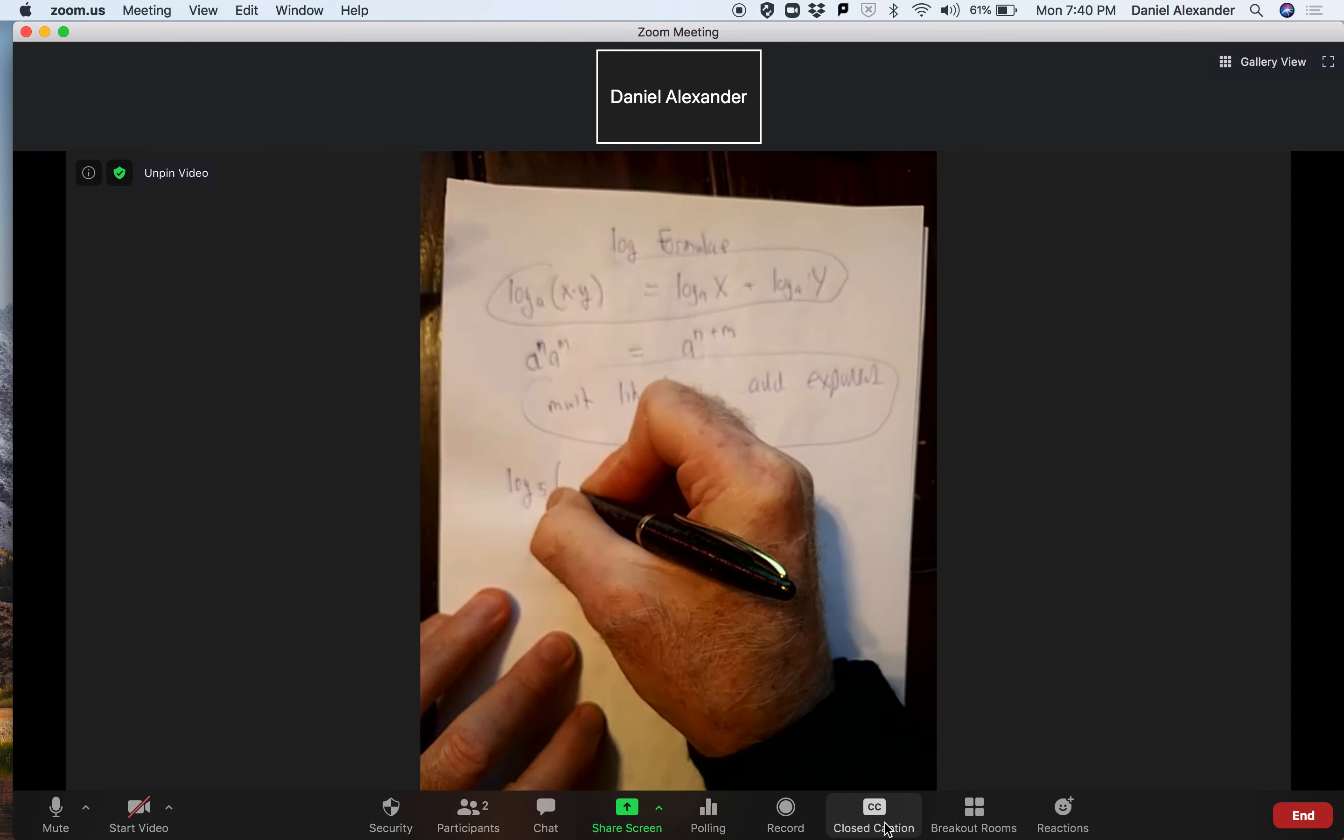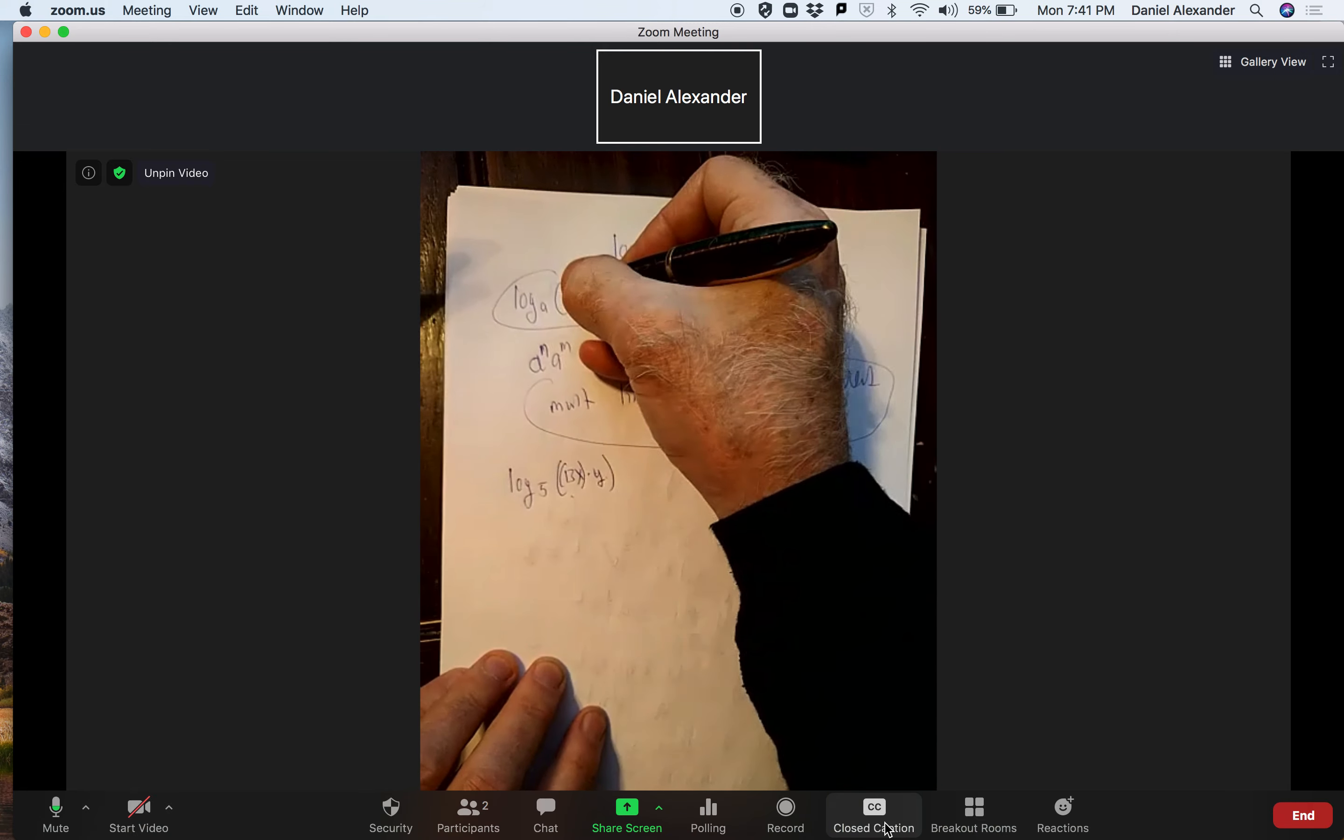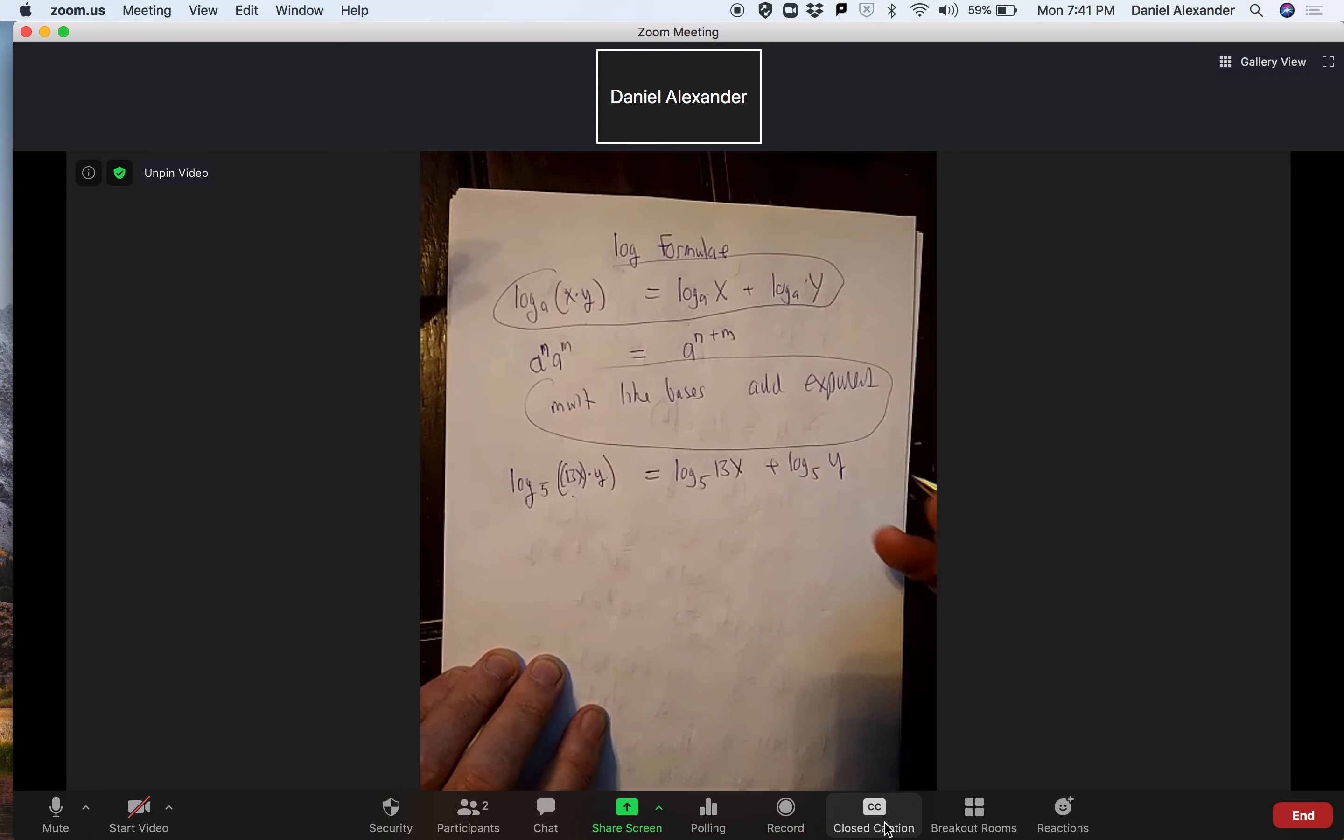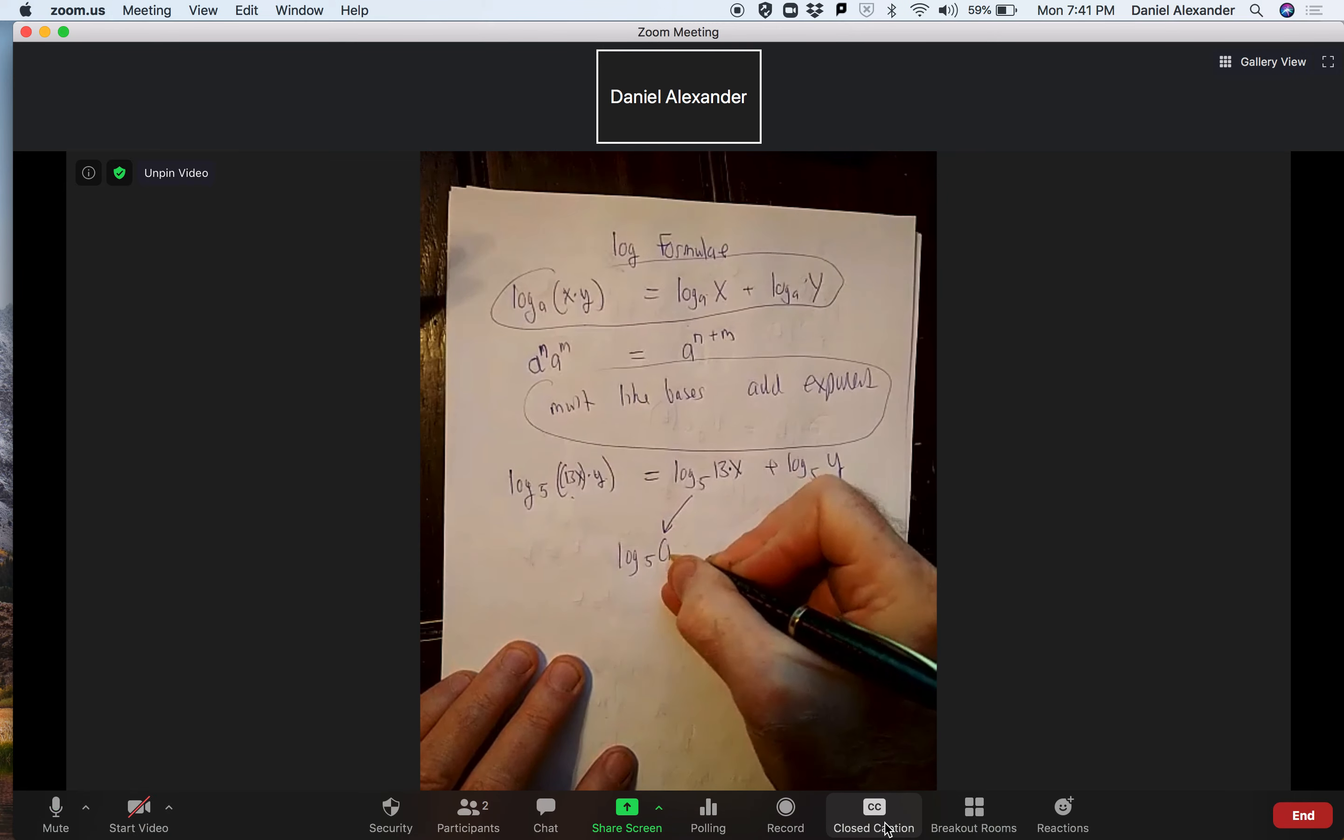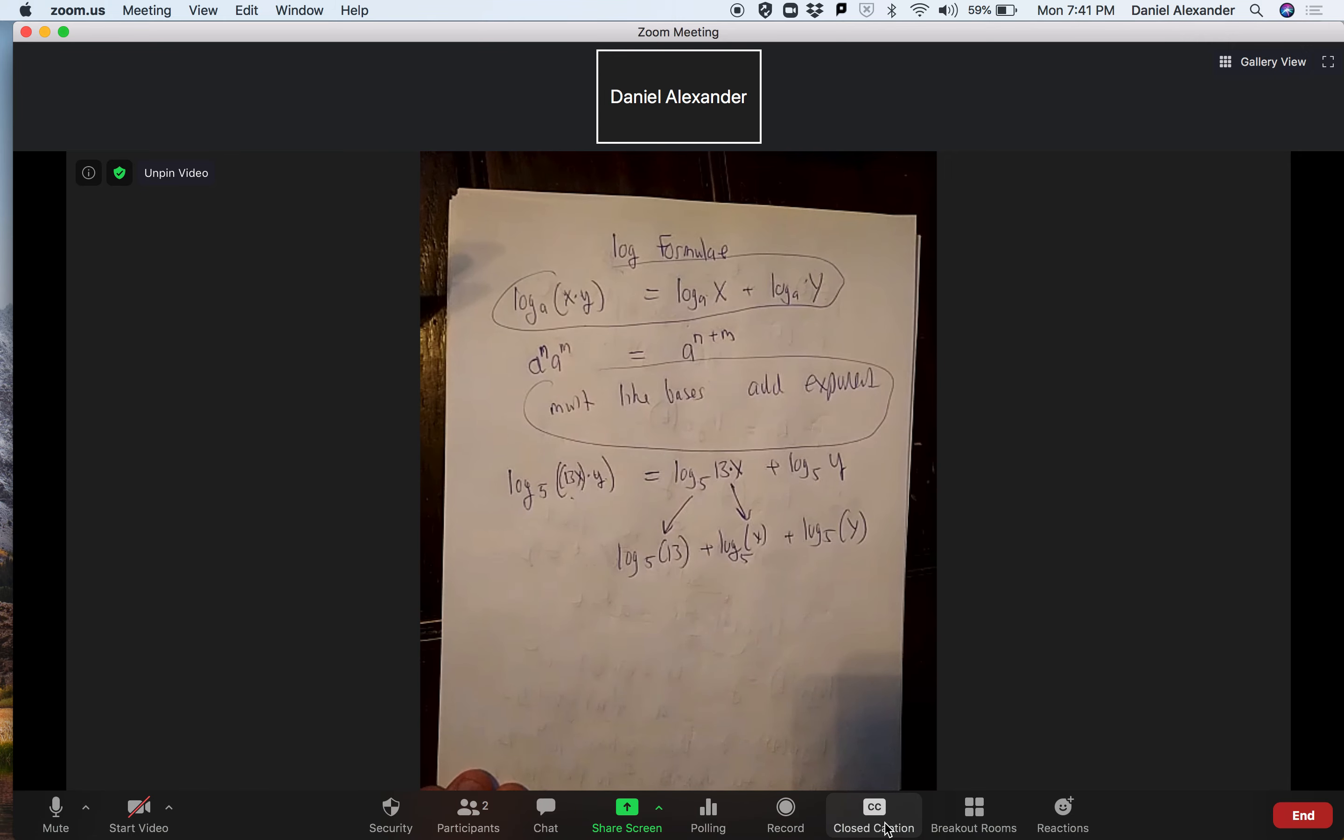So let's do an example just so you get a sense of what this is. We're going to have the log base 5 of 13x times y. Now I'm going to break this down this way, 13x and y. And so this is going to be my first thing. So I get, this is going to be equal to the log 5 of 13x plus the log 5 of y. And if I wanted to, I could break this up more. I have this being 13x, so I can break this up again: log 5 of 13 plus log 5 of x plus log 5 of y. So that broke into those two.